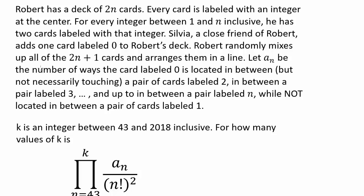Robert randomly mixes up all of the 2n+1 cards and arranges them in a line. Let a_n be the number of ways the card labeled 0 is located in between — but not necessarily touching — a pair of cards labeled 2, in between a pair labeled 3, and up to in between a pair labeled n, while not located in between a pair of cards labeled 1.